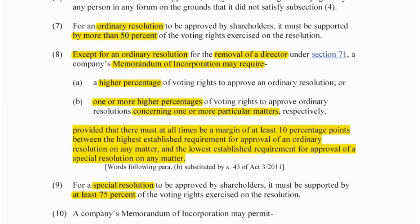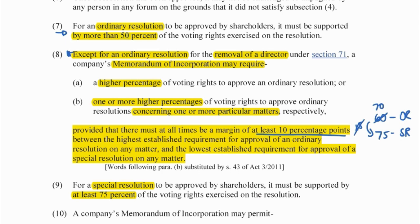Ordinary is more than 50%, but you can amend that — you can choose an ordinary resolution to be 60%. However, you can't amend it when it is for the removal of a director; it has to be more than 50%. There must always be at least a 10% margin between the special and the ordinary. So if you choose 60% as your ordinary resolution and 75% for your special resolution, there is a 15% margin — that's fine. But you can't make your ordinary resolution 70%, because then the margin is only 5%, which is not acceptable.